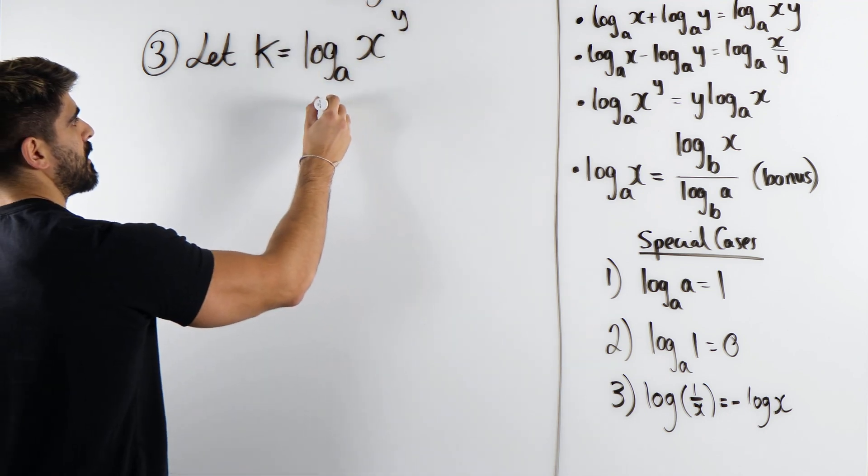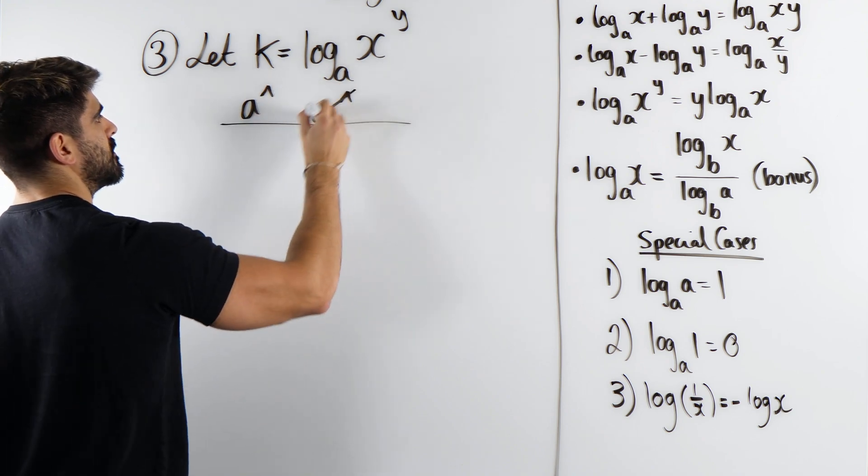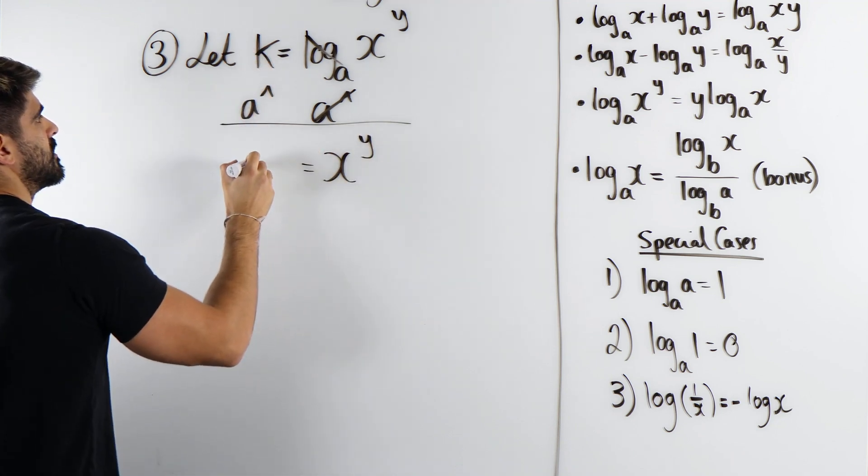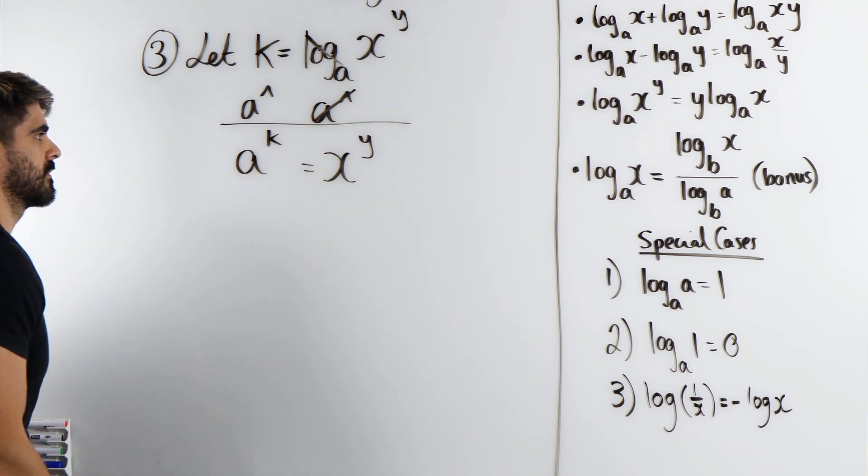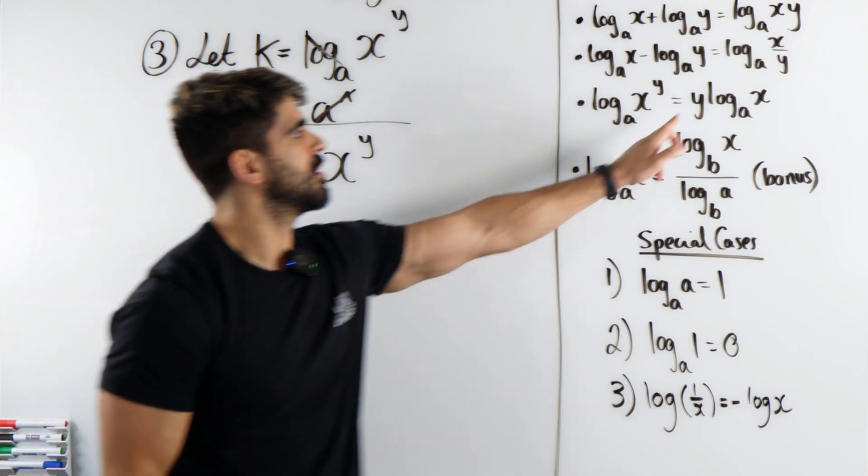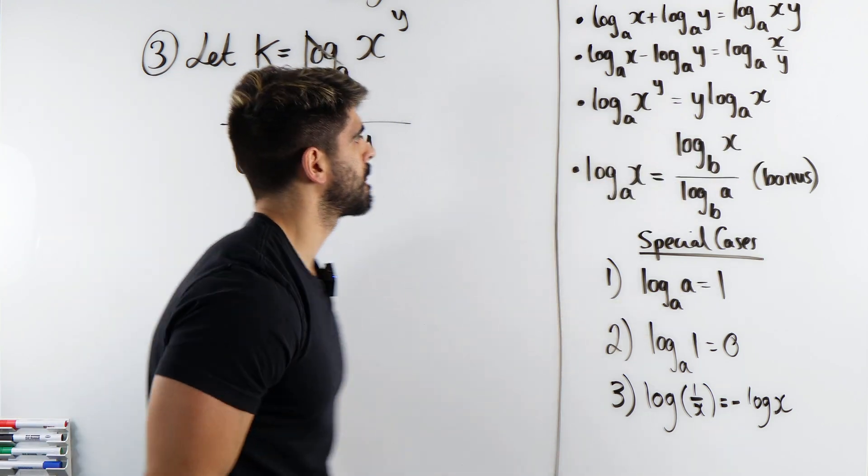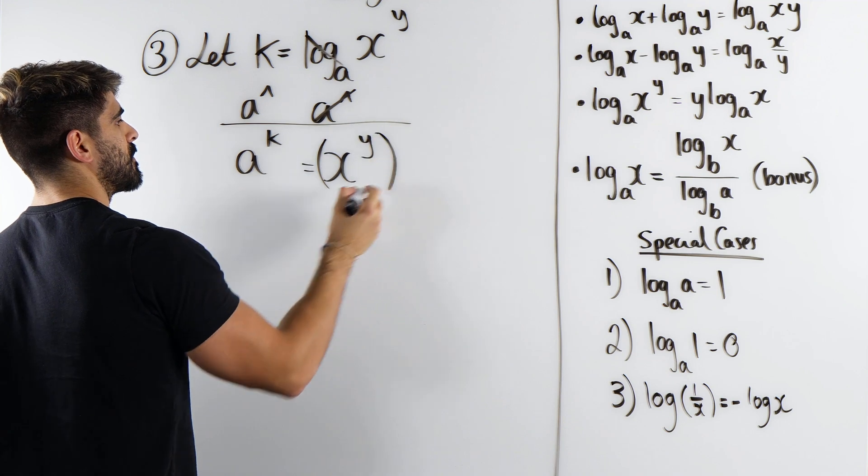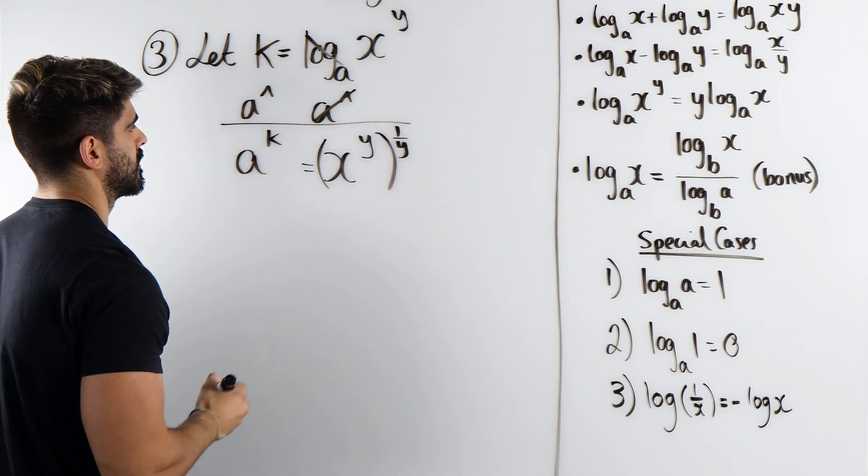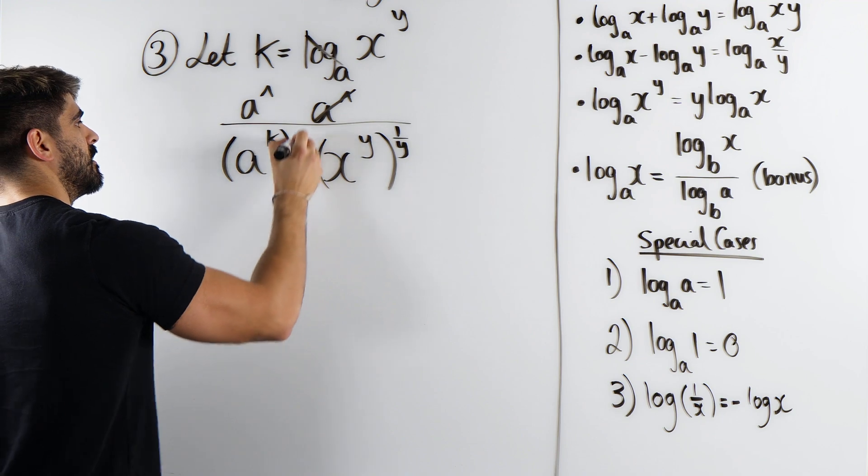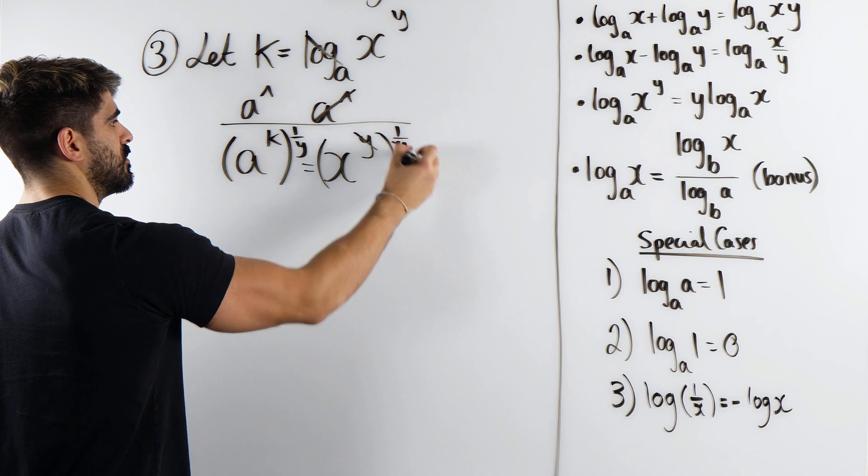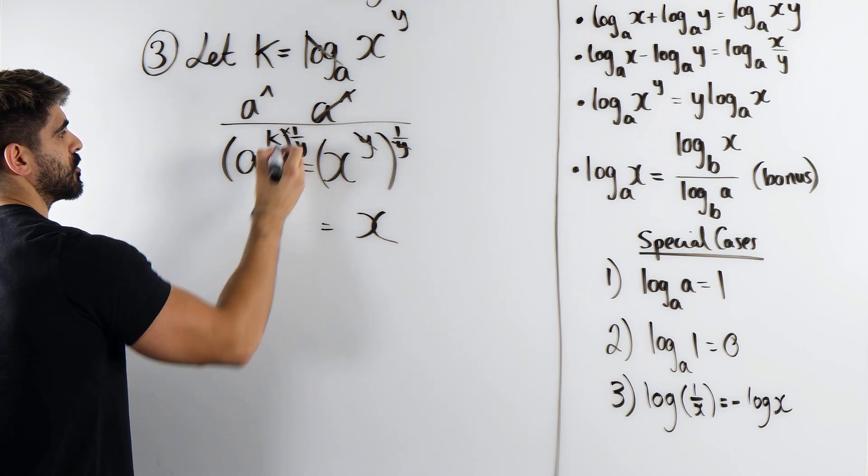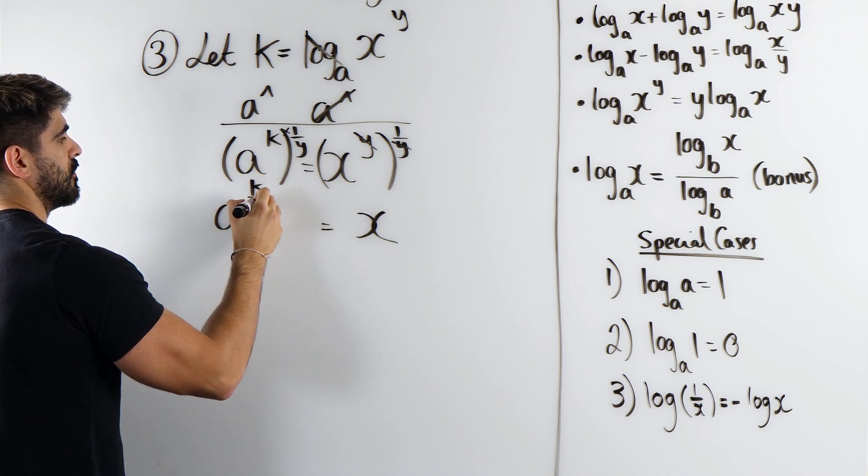I'm going to do the same thing. I'm going to do A to the power of both sides to get rid of the log. So I get X to the power of Y is A to the power of K. The next thing I'm going to do, remember, we want log base A of X. So I'm going to get rid of this power of Y by doing power of 1 over Y. So I'll have power of 1 over Y. This will cancel. We'll have X is A to the power of K over Y.